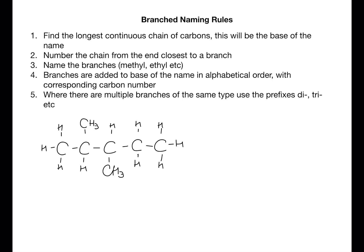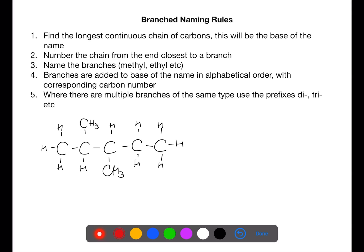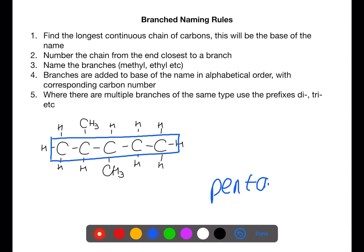The first step is to identify the longest chain of continuous carbons. This will be the base of the name. In this example there are five carbons, so the base is pentane.